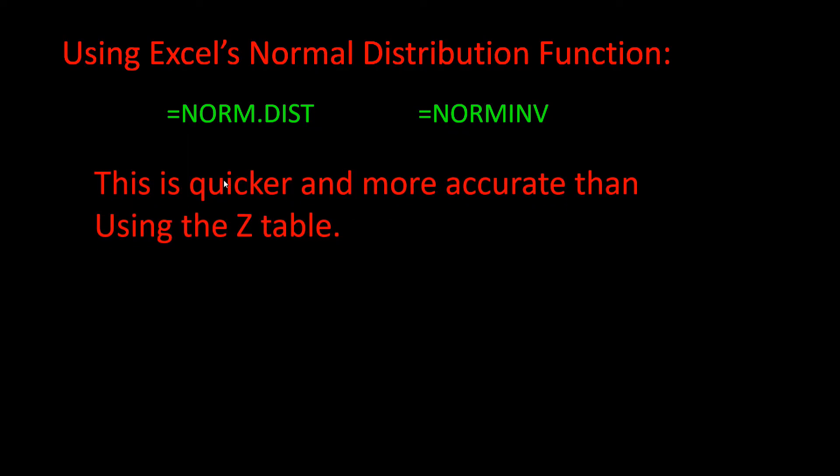The normal distribution function in Excel has the following format. We start every formula with an equal sign, so we have =NORM.DIST and then in parentheses x, the mean, the standard deviation, and whether it is cumulative or not. Let's see what this looks like in Excel.